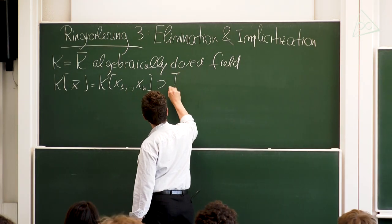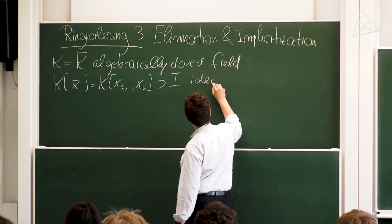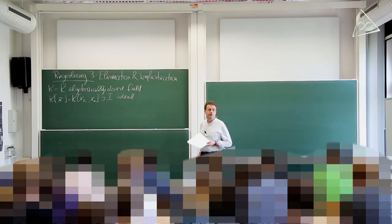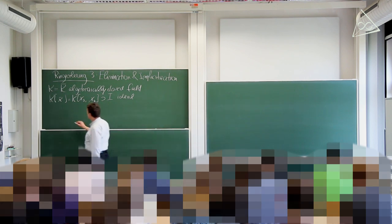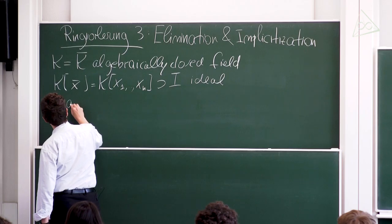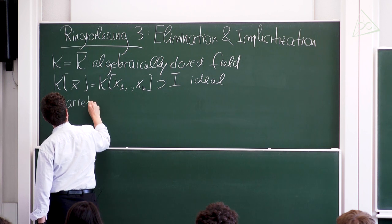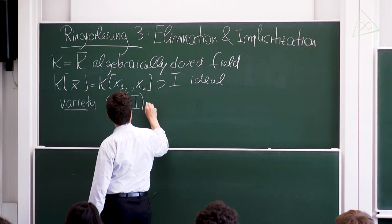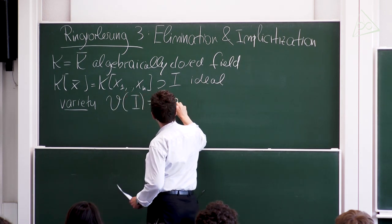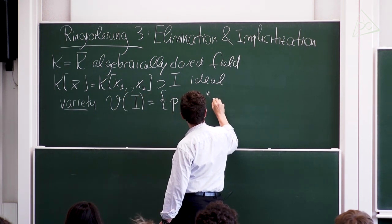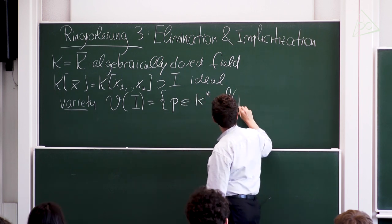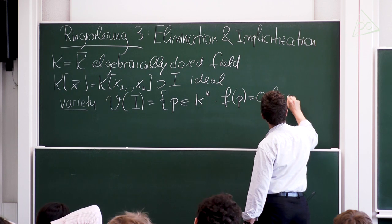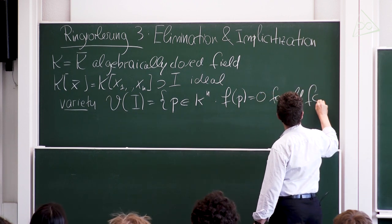I'm going to look at an ideal in the polynomial ring. Associated with this ideal, we can look at the set of zeros, and that's called a variety. So the variety of the ideal, V(I), is the set of all points p in kⁿ such that f(p) equals zero for all f in I.